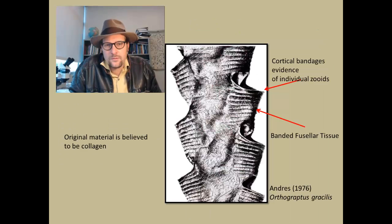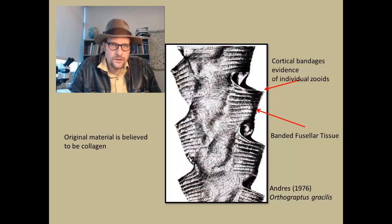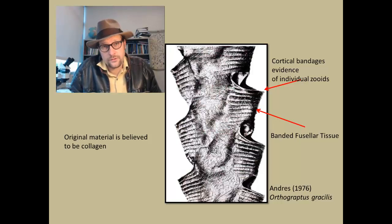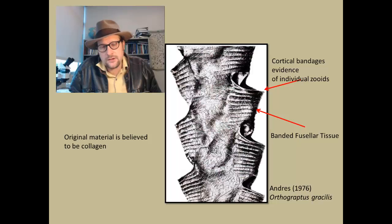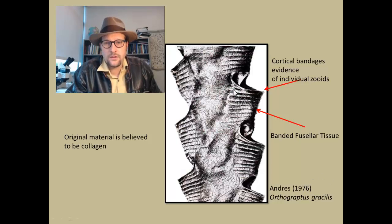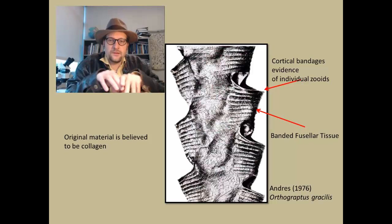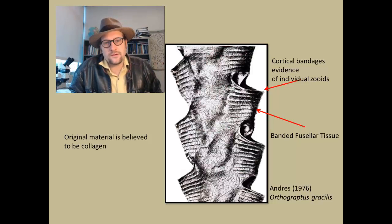These zooids probably were filter feeding. The skeleton itself is made out of collagen — or that's at least what scientists believe the original matter was composed of. Of course when buried under heat and pressure, and these are very old, dating into the Cambrian, that original collagen breaks down into smaller units of carbon and hydrogen bonds. One interesting thing is the cortical bandages — evidence that in each little cup there was an individual zooid that communicated with others through a stolon system. You see banding on the edge underneath the apertures, usually interpreted as growth rings of the zooid, built up as it grew over time.